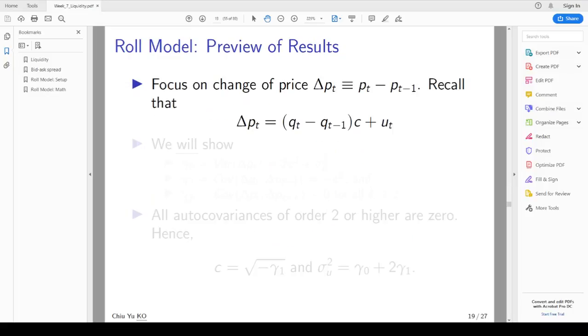Now before we start to show our derivation, we want to preview the result we want. So even if you lose the math we are going to do, you still know what we are doing. We call the change of price delta P_t is P_t minus P_{t-1}. So we know that this is equal to this formula, delta P_t equals Q_t minus Q_{t-1} times c plus u_t. So we will show what we are going to do in the next 5 to 10 minutes or so.